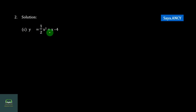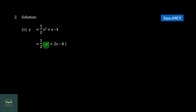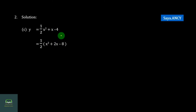A squared plus A minus 4. First of all, the problem is 1, 2. Then 2A squared plus 1, 2. Then 3, 3. Then 4, 4.